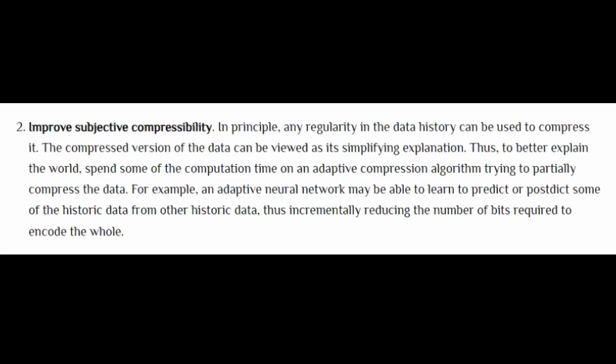Step two: improve subjective compressibility. In principle, any regularity in the data history can be used to compress it. The compressed version of the data can be viewed as its simplifying explanation. To better explain the world, spend some computation time on an adaptive compression algorithm trying to partially compress the data. For example, an adaptive neural network may be able to learn to predict or post-dict some of the historic data from other historic data, thus incrementally reducing the number of bits required to encode the whole.